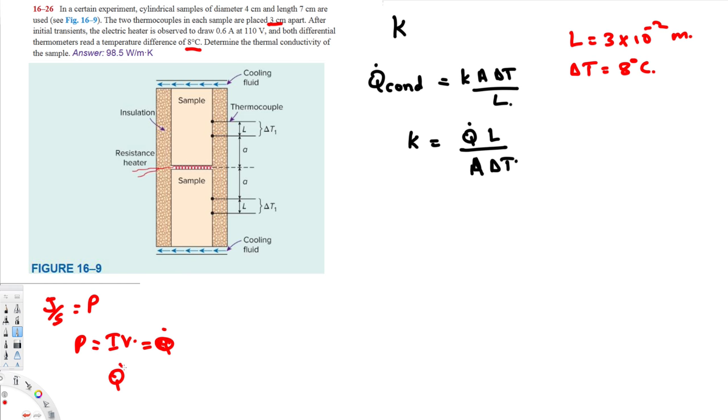So we can calculate heat transfer rate using this equation. Q̇ is going to be the same as that. So let's calculate Q̇. Q̇ is going to be equal to IV, so I is given by 0.6 amperes times 110 volts. If you calculate this one, that's going to give you 66 watts.